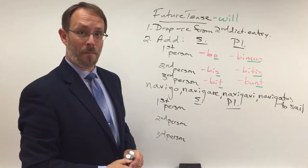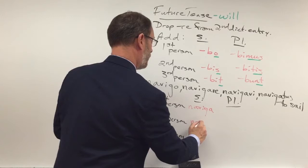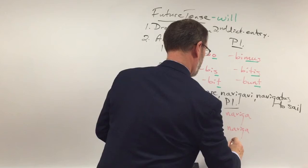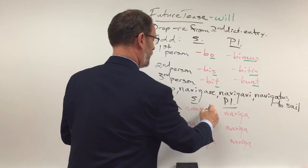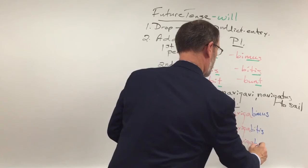Alright, what we should have done is drop the RE off the second dictionary entry. That would have given us 'naviga' all the way through as a stem. I like writing the stem down everywhere. Then we simply pop the endings on: navigabo, navigabis, navigabit, navigabimus, navigabitis, navigabunt.